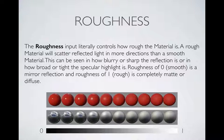Next is roughness, and this really is the most important map that defines the material. Here we have two rows of spheres — the top row are dielectric or non-conductor materials, and the bottom row is conductors or metallic materials. Roughness ranges from 0 to 1; the spheres start at 0 and go up incrementally by 0.1, all the way to 1, defining how rough or smooth the surface is.